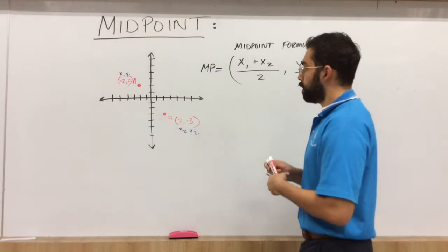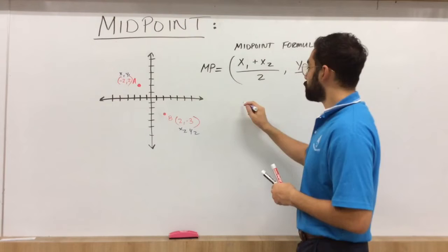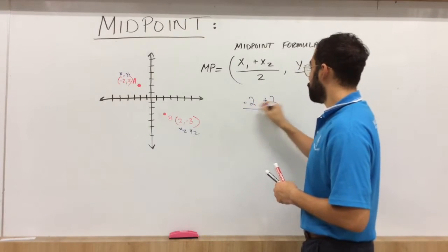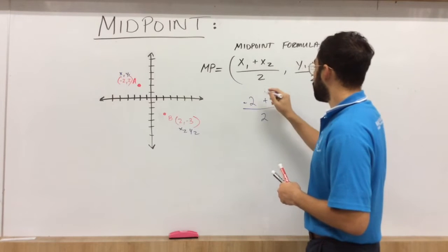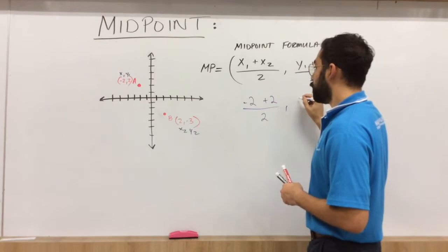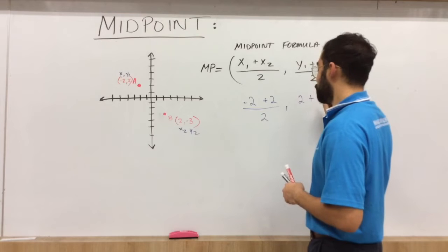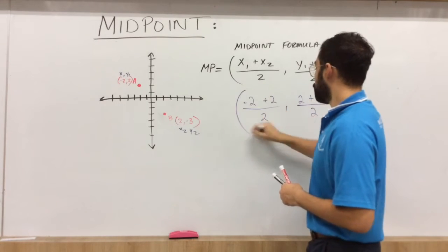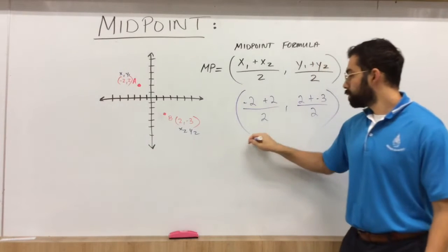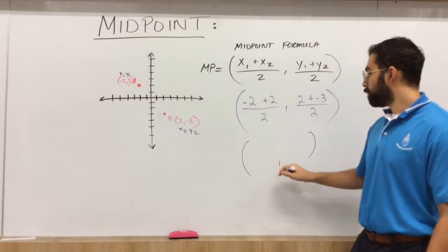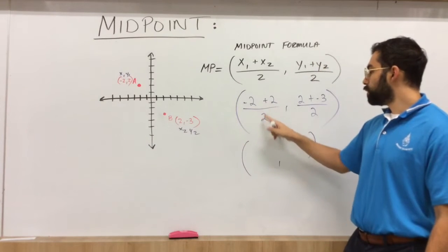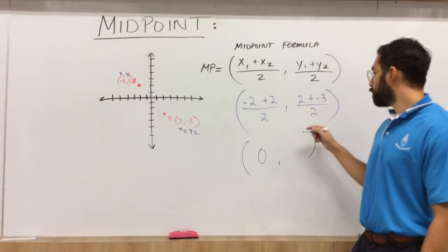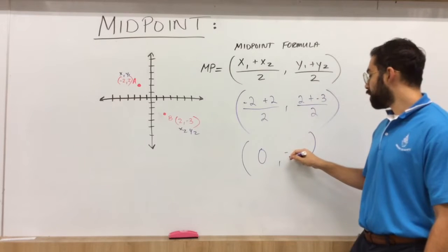So what we have here is x1, x2: negative 2 plus 2 divided by 2, comma, your y1, y2: 2, negative 3 divided by 2. So at the end you are going to have an ordered pair. Negative 2 plus 2 is 0. 0 divided by 2 is 0. 2 minus 3 divided by 2 is negative 0.5.